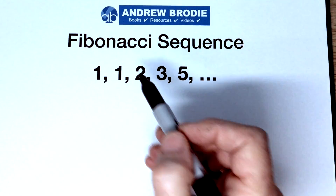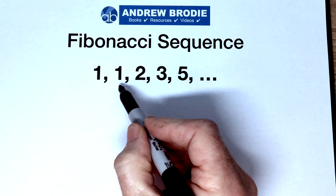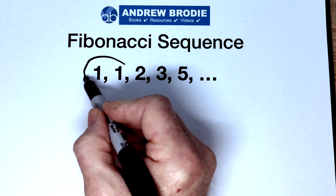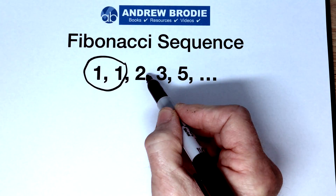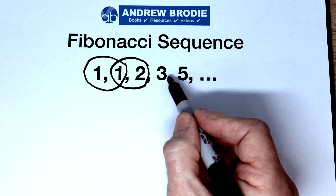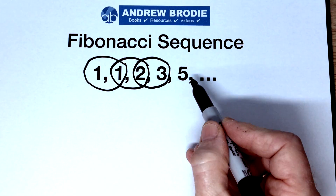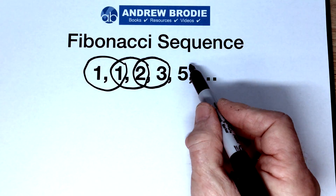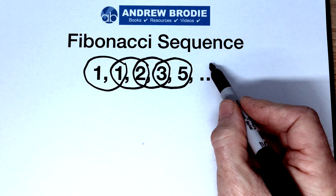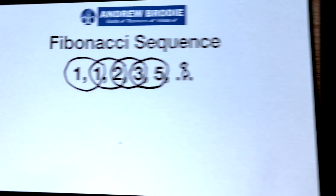This is the Fibonacci sequence. 1 add 1 makes 2. 1 add 2 makes 3. 2 add 3 makes 5. 3 add 5 gives us 8. Fibonacci.